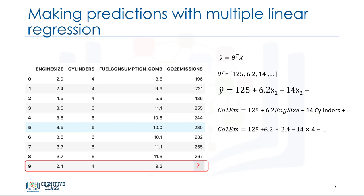Now, let's plug in the ninth row of our data set and calculate the CO2 emission for a car with the engine size of 2.4. So, CO2 emission equals 125 plus 6.2 times 2.4 plus 14 times 4 and so on. We can predict the CO2 emission for this specific car would be 214.1.